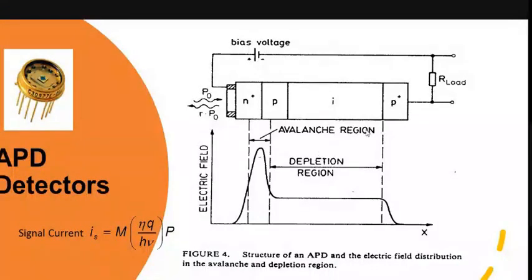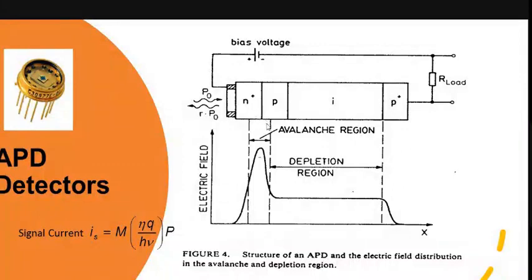This increases the receiver sensitivity since the photocurrent is multiplied before the thermal noise associated with the circuit is added. Thermal noise arises due to the random motion of electron flow within the device. Before that thermal noise gets added, multiplication takes place, hence receiver sensitivity is high. The photo-generated electrons or holes gain enough energy to ionize bound atoms — this is impact ionization.